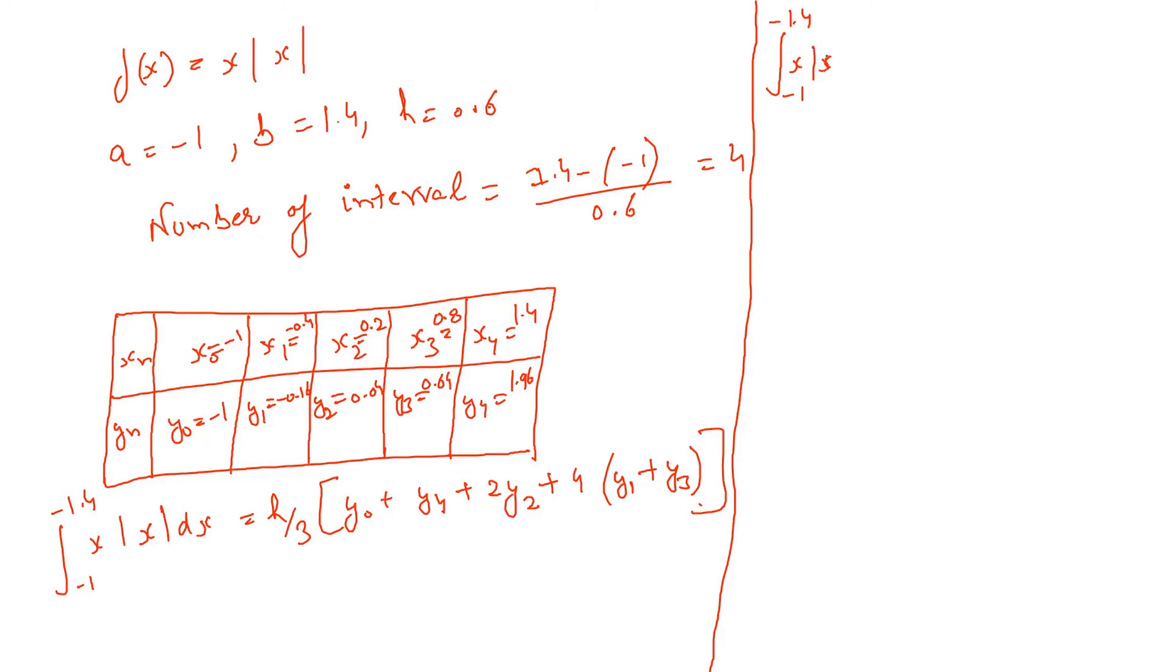Minus 1 plus 1.96 plus 2 into 0.04 plus 4 into minus 0.16 plus 0.64. So this would be the Simpson's rule therefore minus 1 to 1.4 x mod of x dx value would be 0.592.